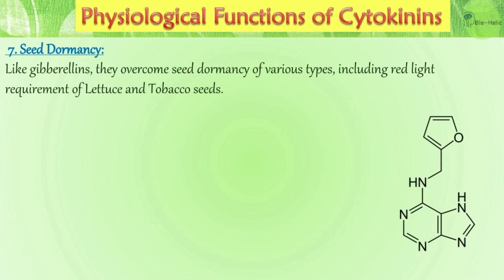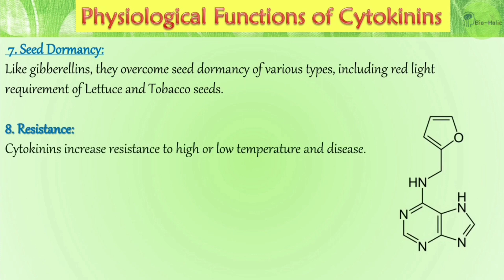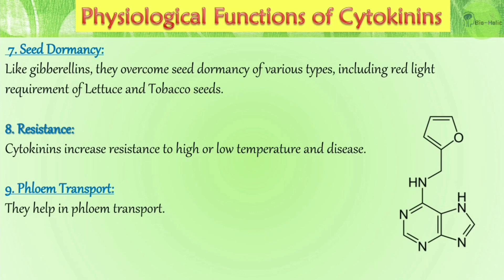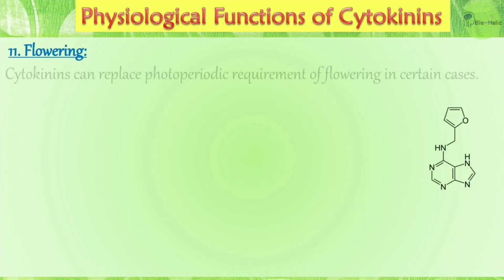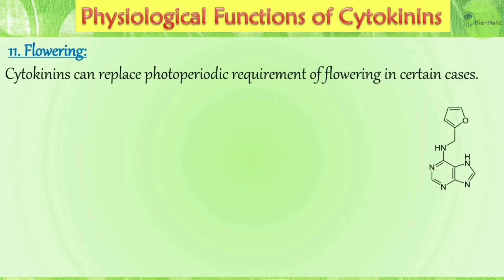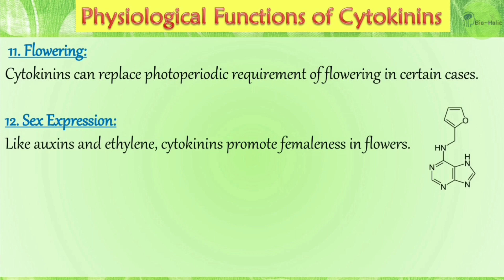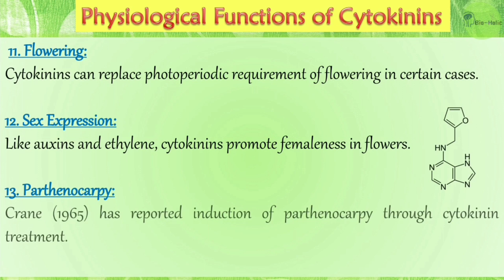Sixth, seed dormancy: like gibberellins, cytokinins overcome seed dormancy of various types, including the red-light requirement of lettuce and tobacco seeds. Seventh, resistance: cytokinins increase resistance to high or low temperatures and diseases. Cytokinins are also important for flow and transport, and the kinetin type induces accumulation of salts inside the cells. Cytokinins are important for flowering — they can replace the photoperiodic requirement of flowering in certain cases. Like auxins and ethylene, cytokinins promote femaleness in flowers, and in 1965 Crane reported induction of parthenocarpy through cytokinin treatment.